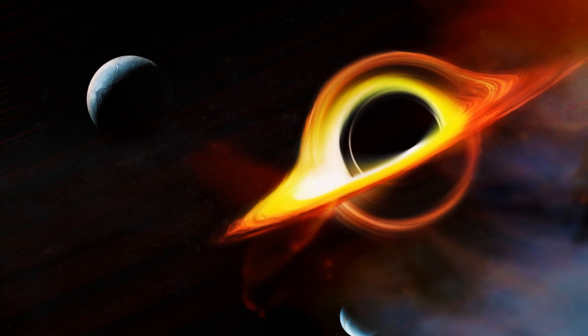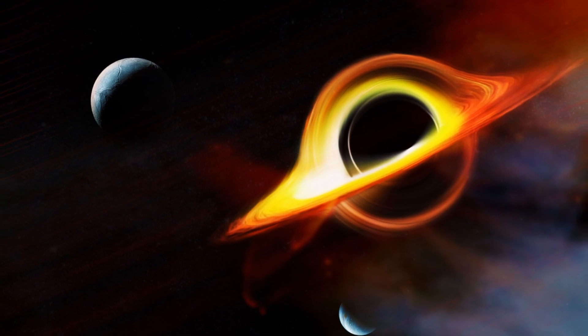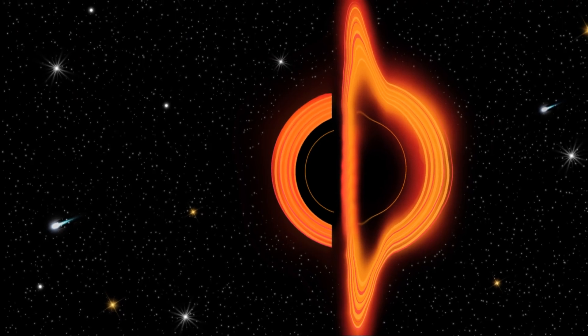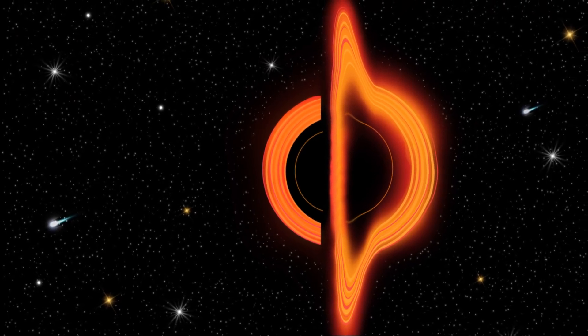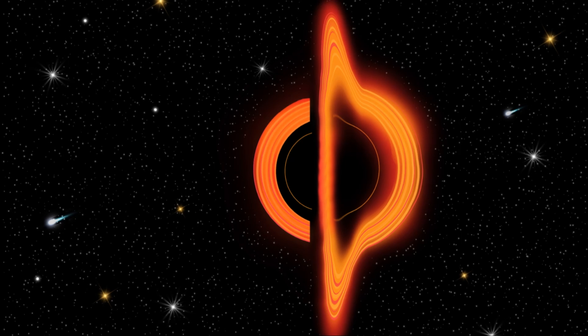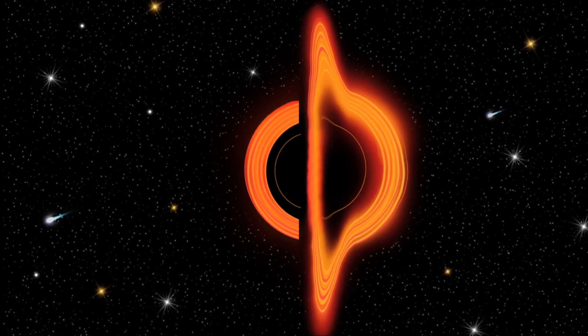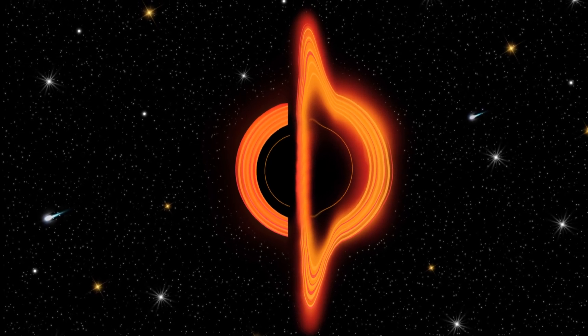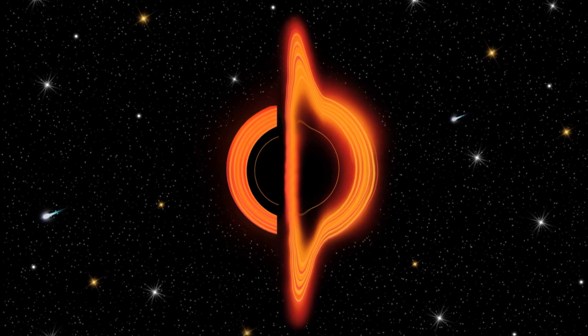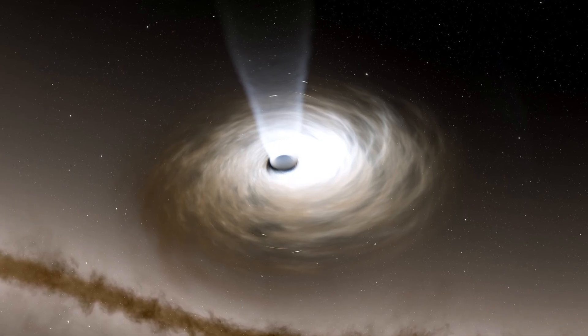But how do black holes like Phoenix A even form? Well, we believe they grow over time by consuming gas, dust, stars, and even other black holes. They're like cosmic vacuum cleaners, pulling in everything within their gravitational reach. The bigger they get, the more they consume.